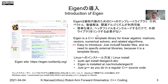Eigen is easy to introduce because it is a header-only template library — we just include the header files and when compiling we don't need to specify an external library. To install Eigen on Linux, just run: sudo apt install libeigen3-dev. Eigen will then be installed in /usr/include/eigen3.